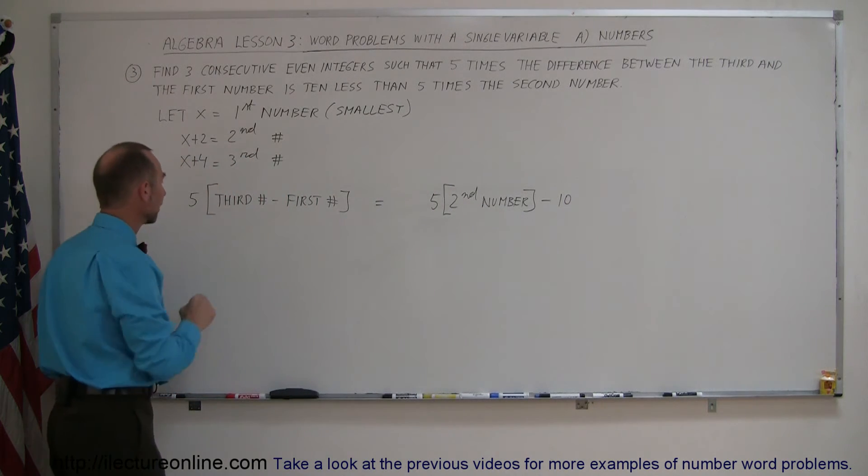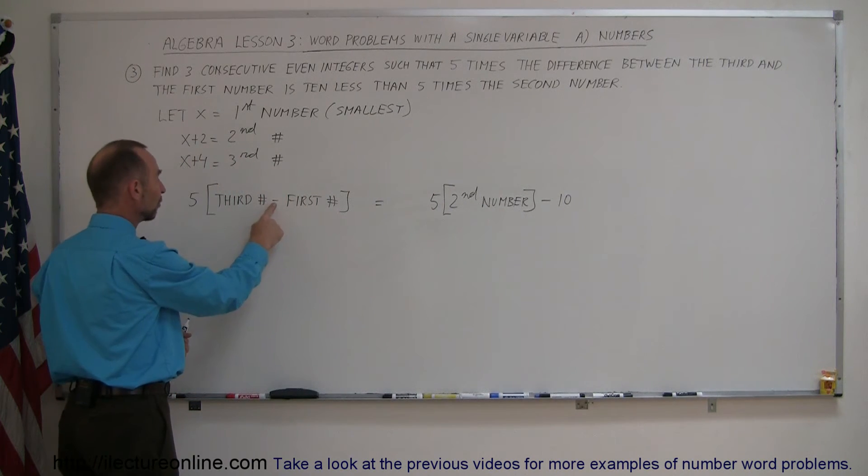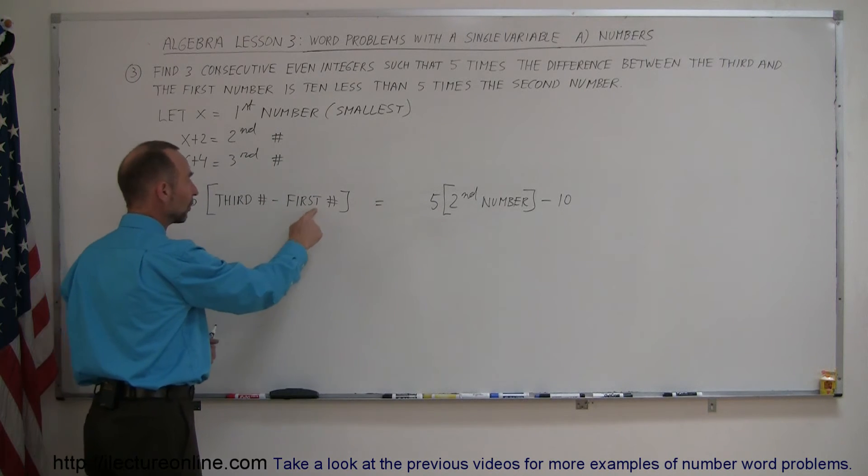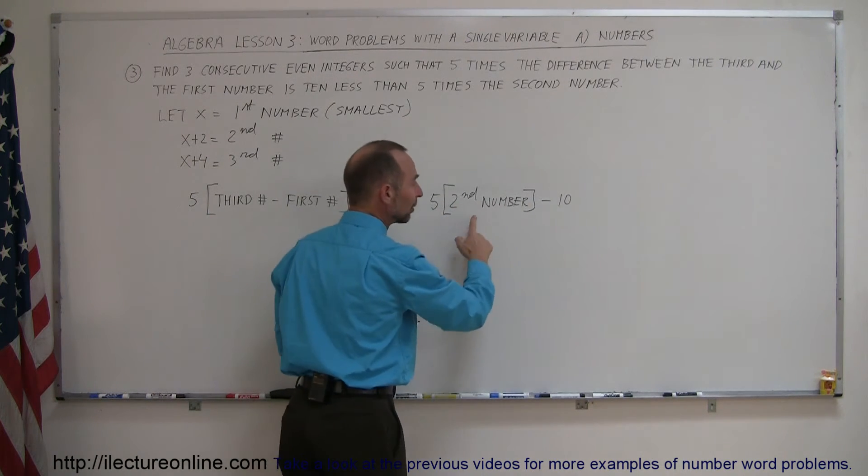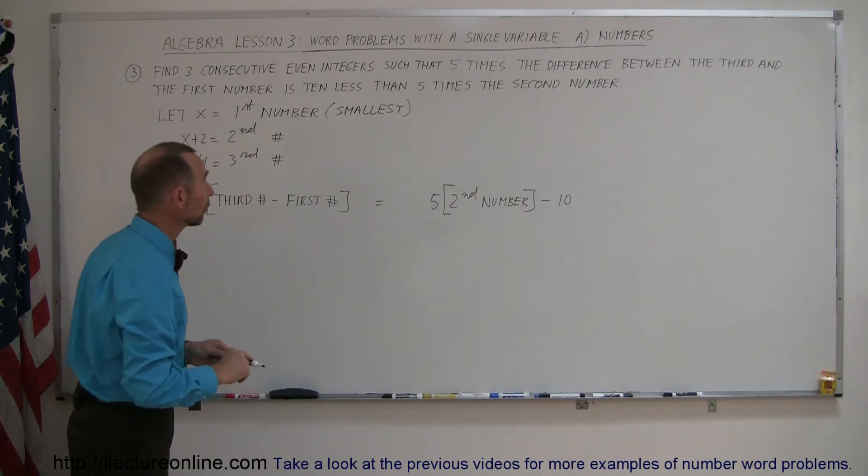All right. So again, 5 times the difference between the third number and the first number equals 10 less than 5 times the second number. Now we can go ahead with each one of those are equal to.